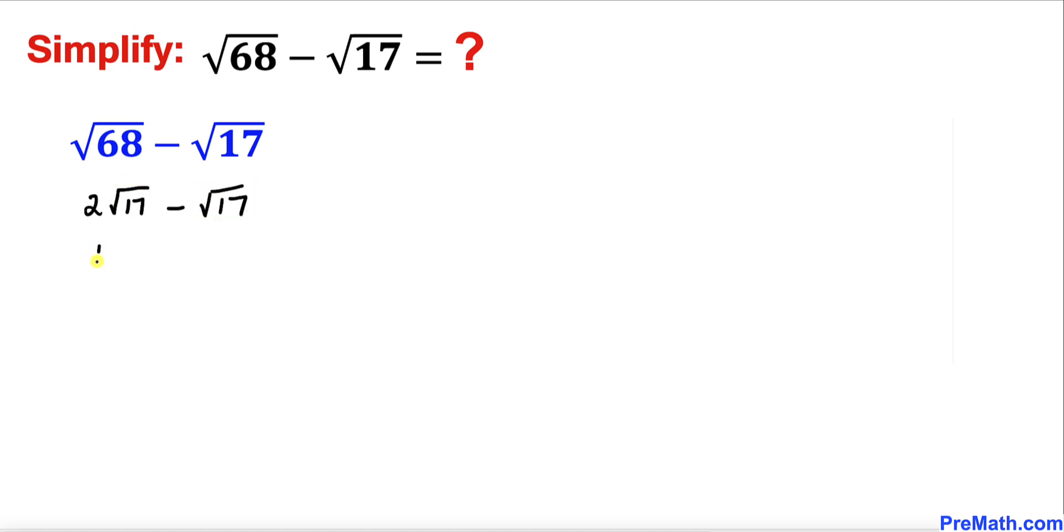Therefore, I can factor out √17, and in parentheses is 2 - 1. That simplifies to √17 × (2 - 1). Since 2 - 1 is 1, we get √17 × 1.